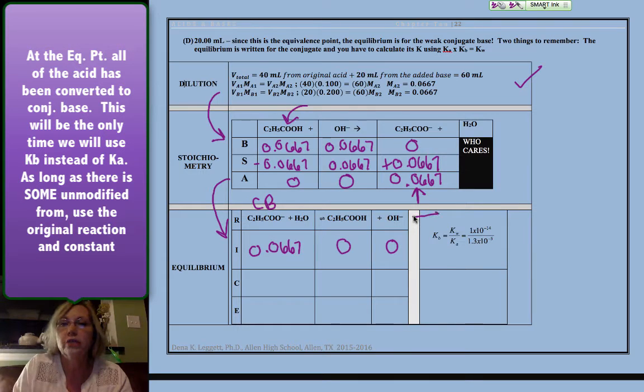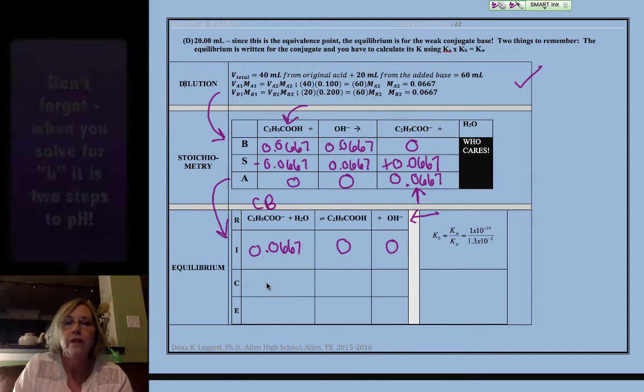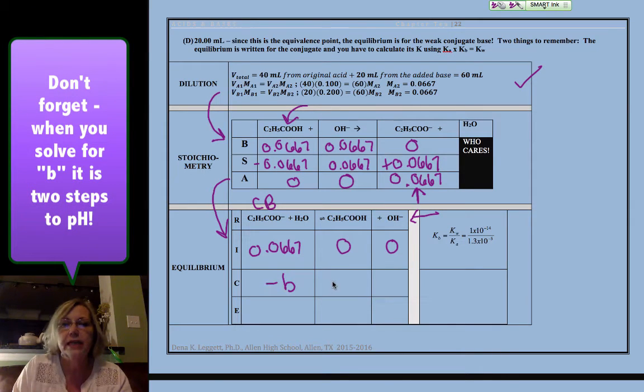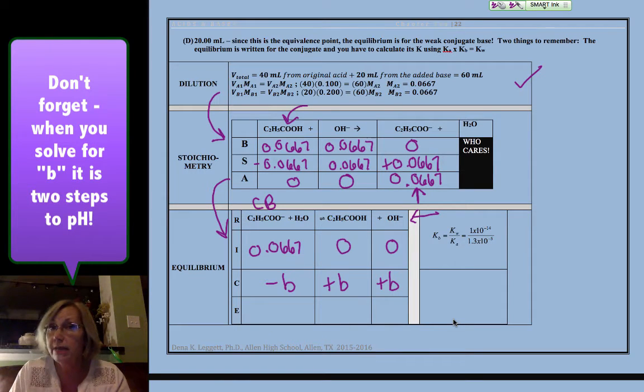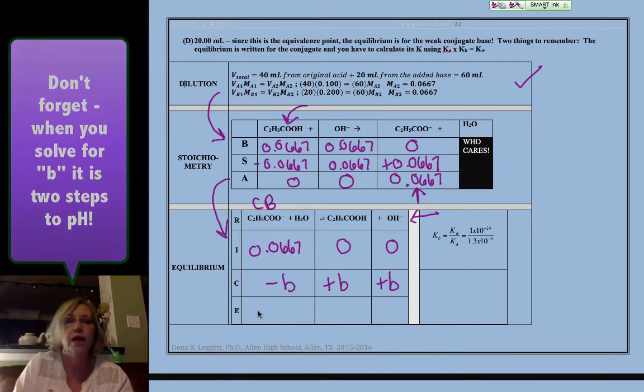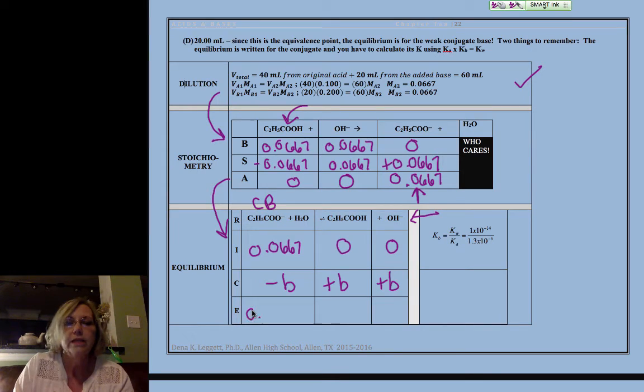Notice the change in the reaction here. It's now a base reaction. So I'm going to say minus B, plus B, plus B. Now, those of you who've been watching the videos know I use B as a subtle reminder that it's going to be two steps to pH, not just one.